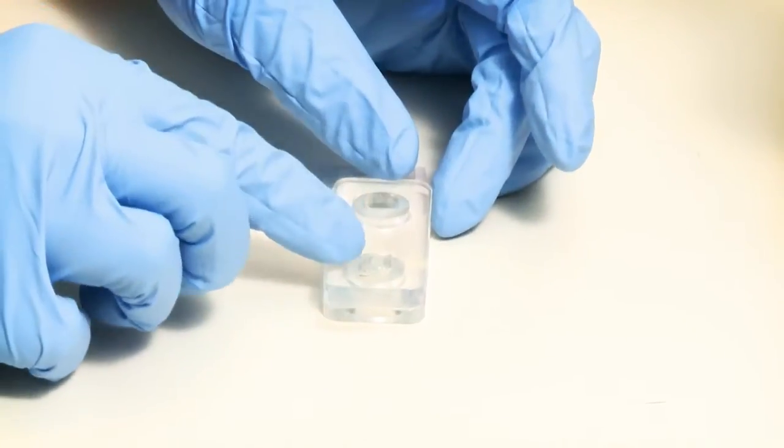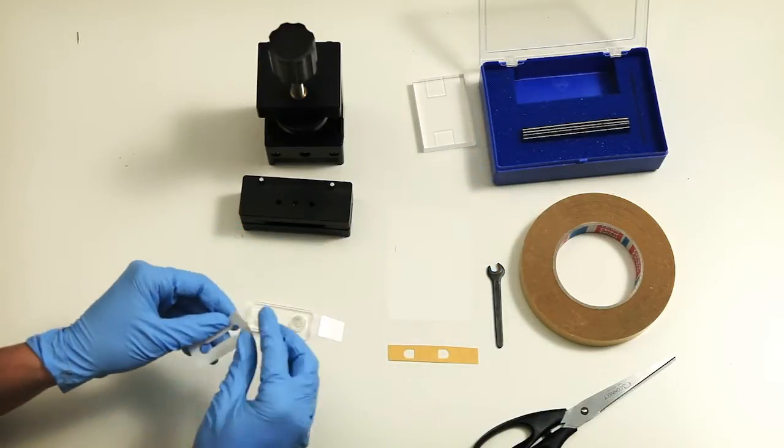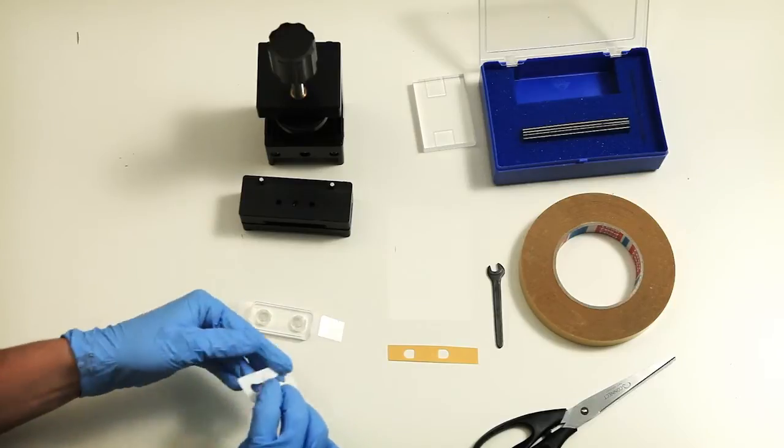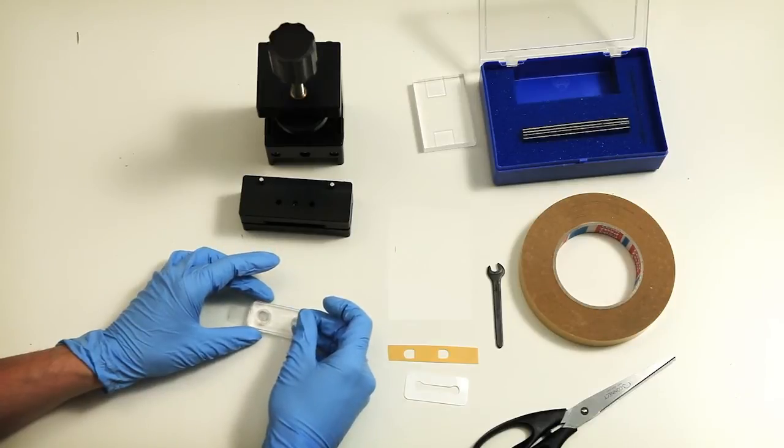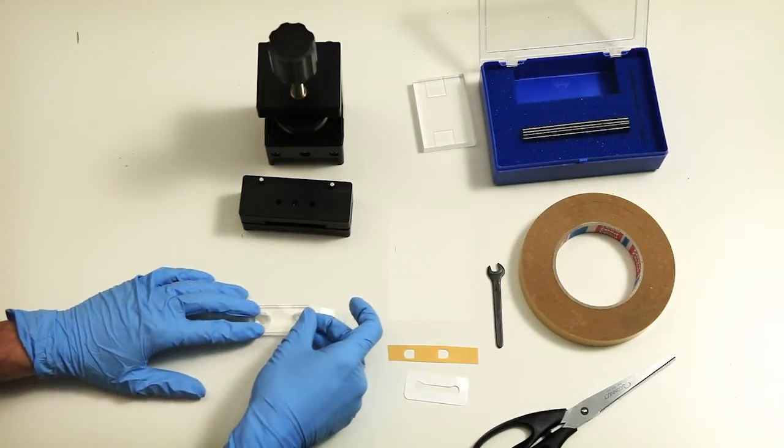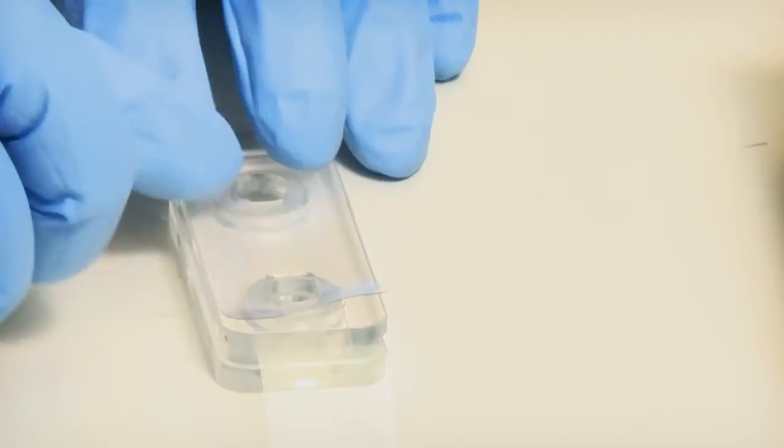This area here is where your measurement will take place, so you need to create a measuring gap where the electrolyte can stream through. To generate this measuring gap, you attach a so-called spacer to your sample.